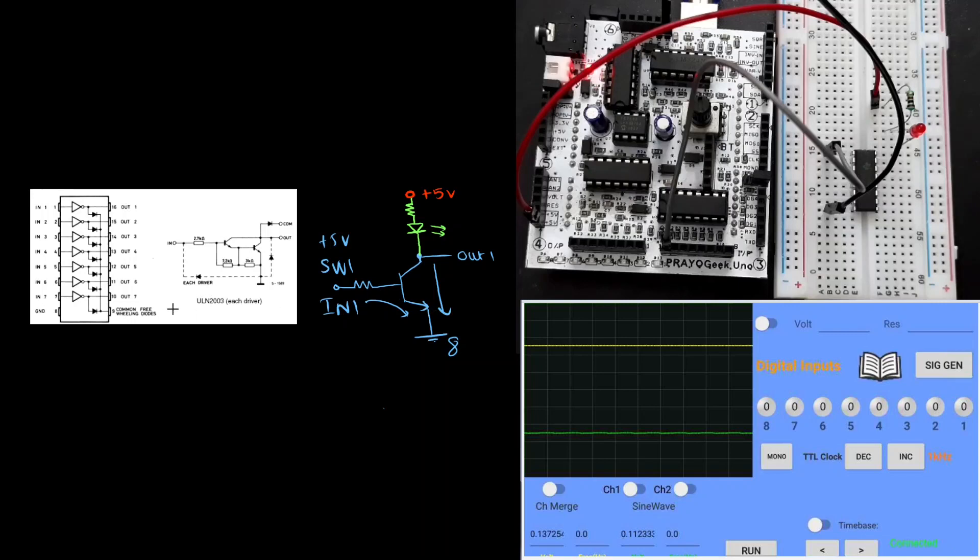By comparing this ULN2003 driver to a transistor, it is very easy for you to understand and it helps you to make various connections. I want to limit this video to the discussion of just an LED driver. The reason for that is to keep it simple. I would suggest you repeat this experiment at your end and understand how exactly you can make use of the ULN2003 IC.